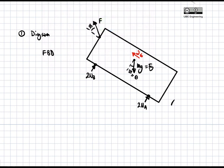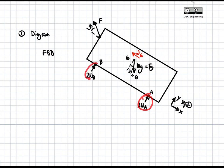Let me draw in the coordinate system for reference: y is perpendicular to slope, x is along the slope, and positive rotation is counterclockwise. Points B, A, and G are labeled accordingly. We'll do our force balance starting with the x direction, then the y direction, then a moment balance — that gives us enough equations to solve for the three unknowns: the acceleration, NA, and NB.